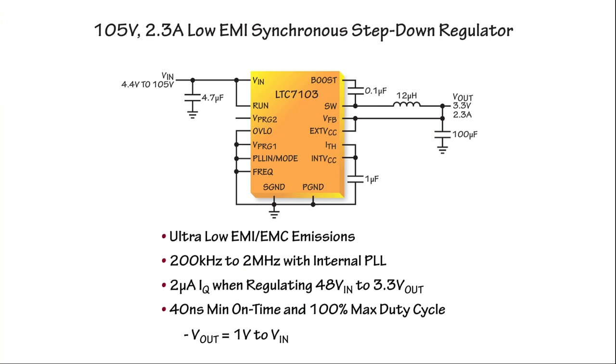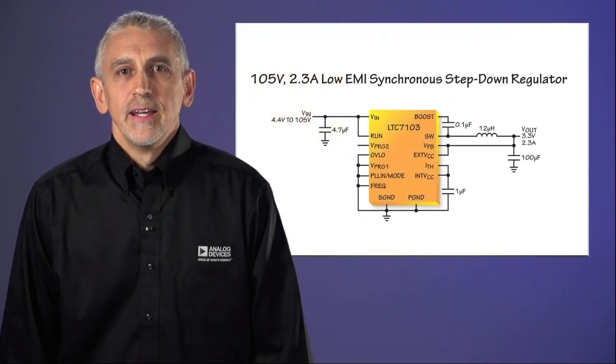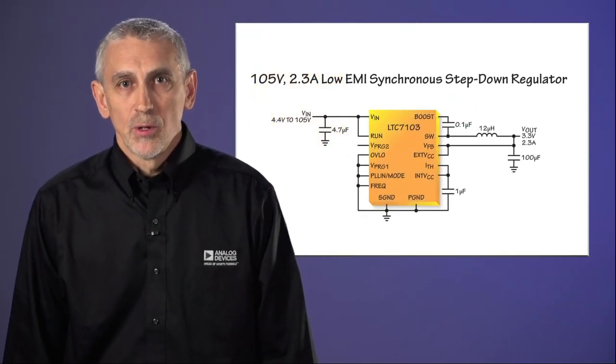In this simple example, we see a step-down regulator that produces a 3.3V 2.3A regulated output from a DC input supply that can vary between 4.4V and 105V. In addition to a very wide input voltage range,